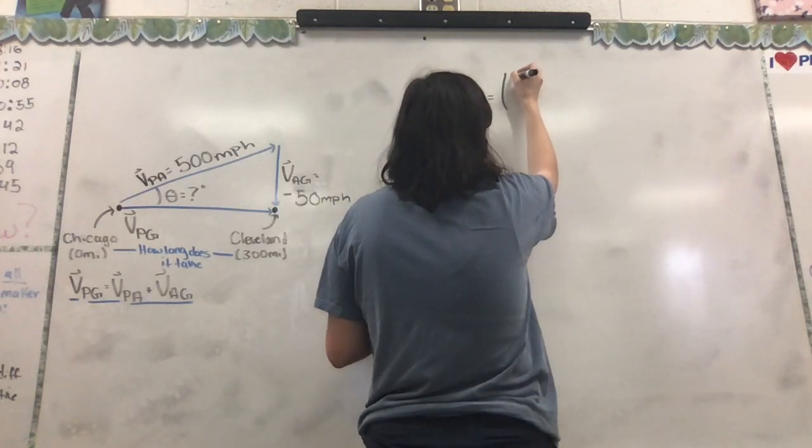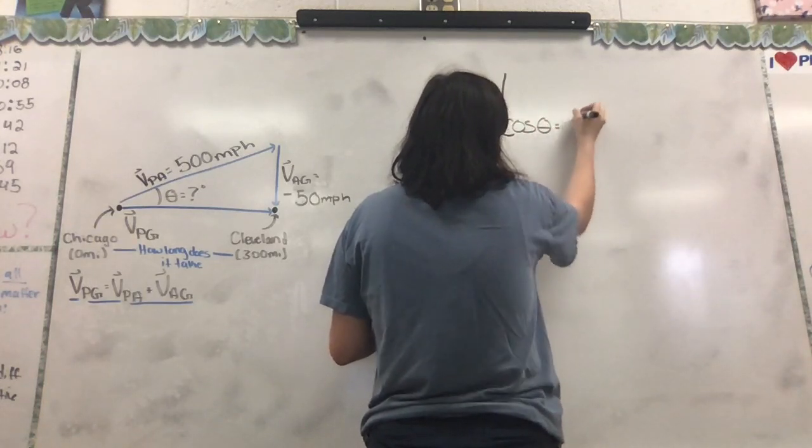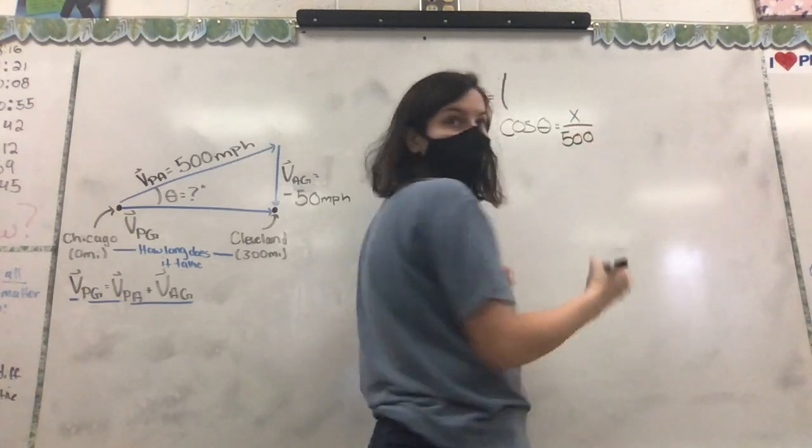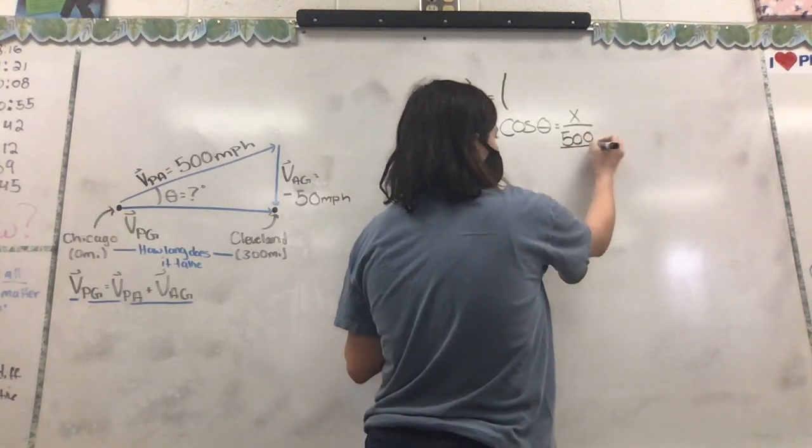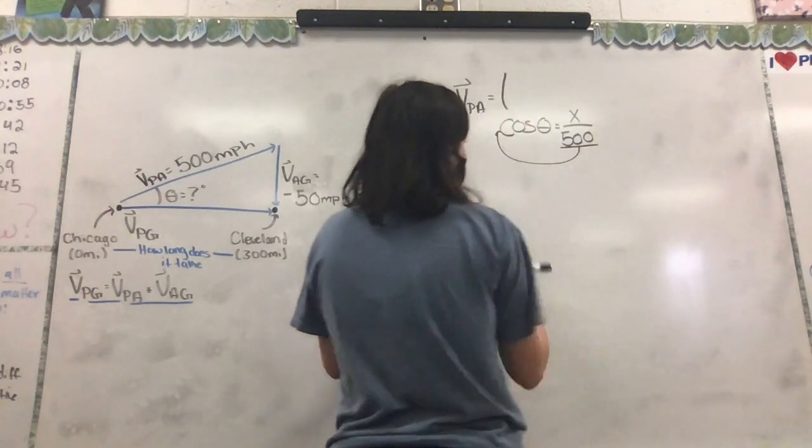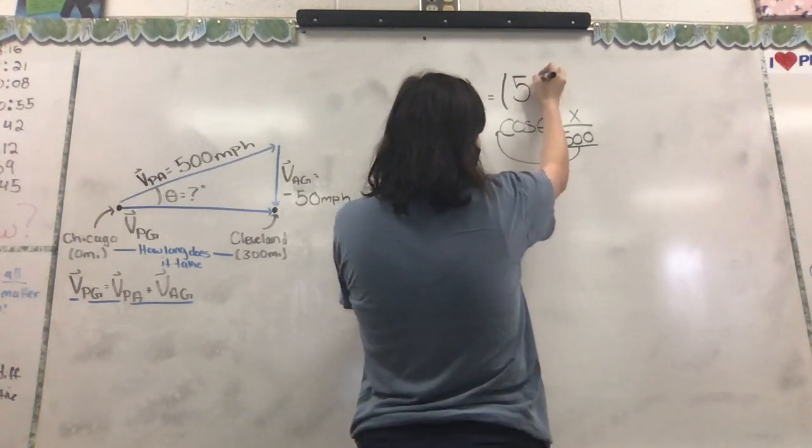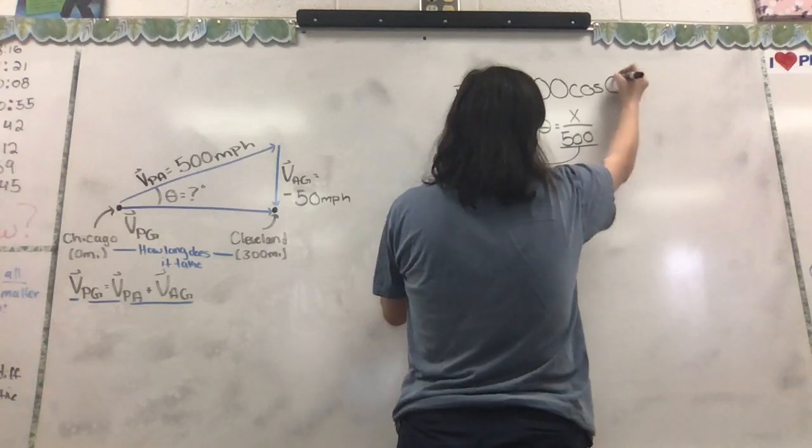Now that means we're going to have the cosine of theta is equal to X over the hypotenuse, right? And what are we going to do to get X by itself? Multiply that 500 over. So that means that our X component is going to be 500 cosine of theta.